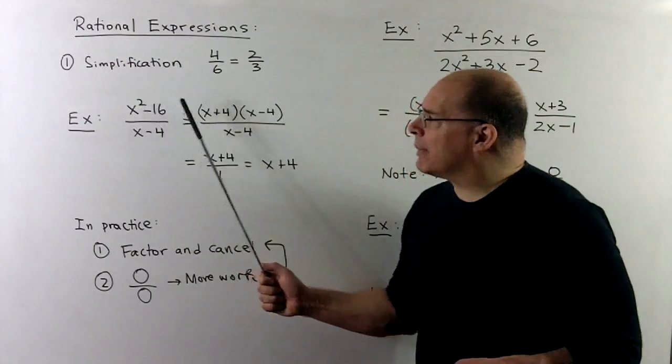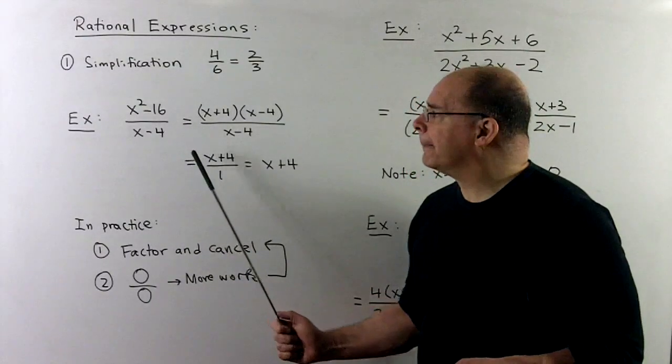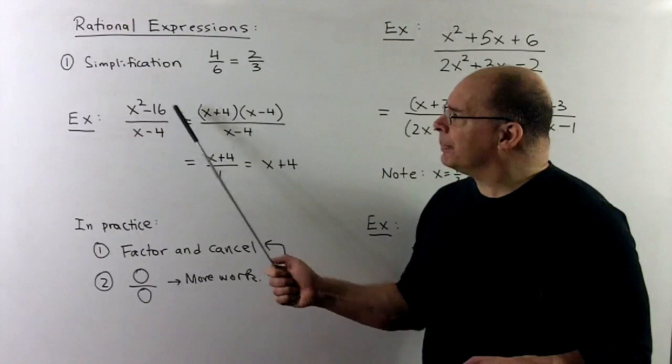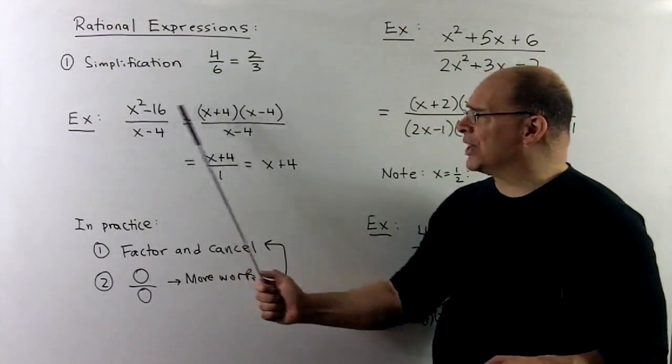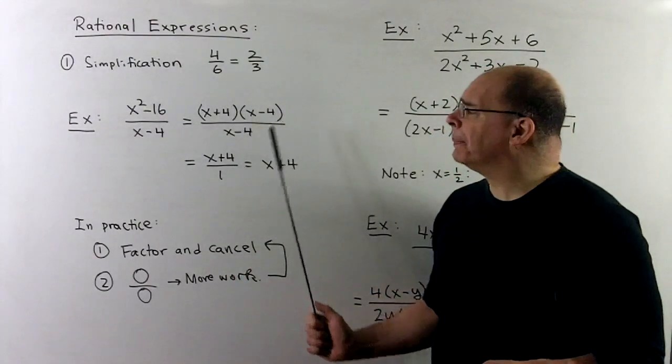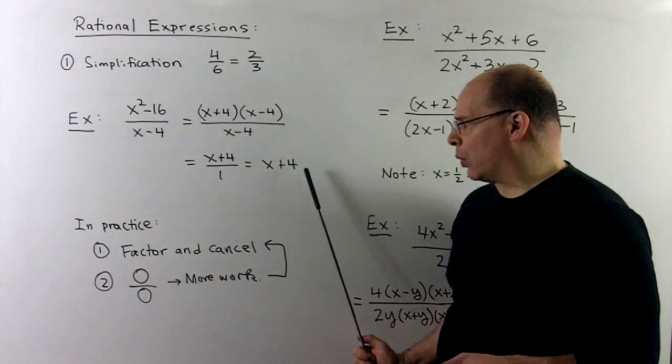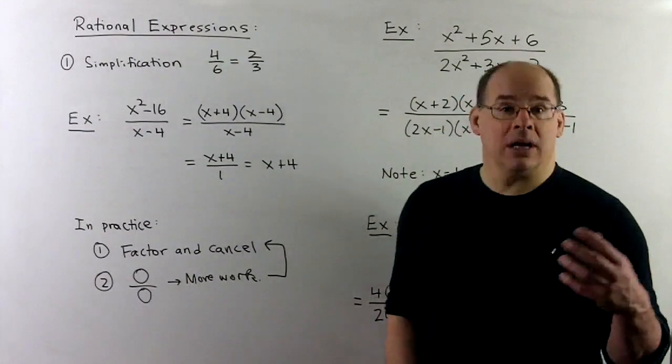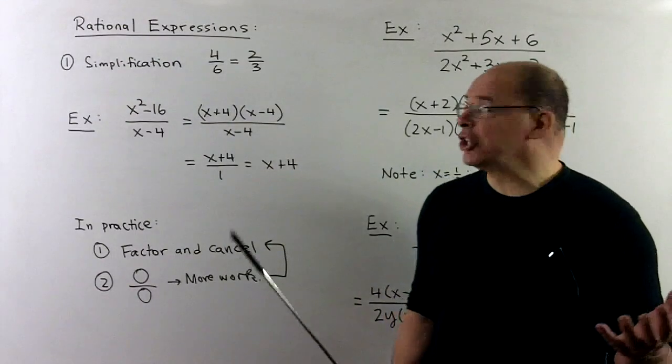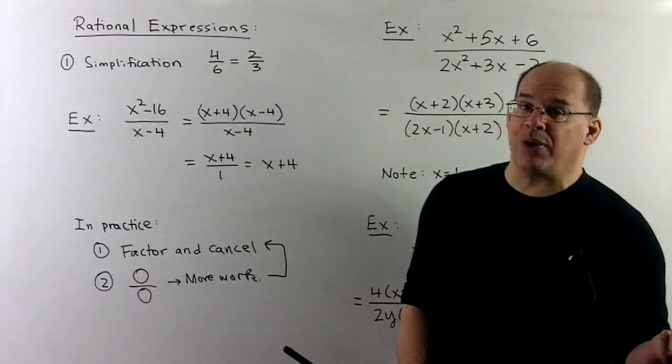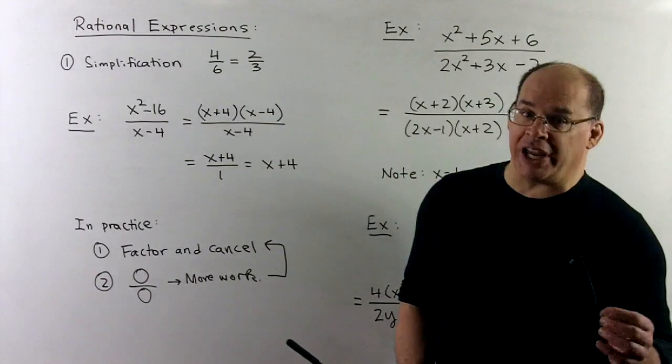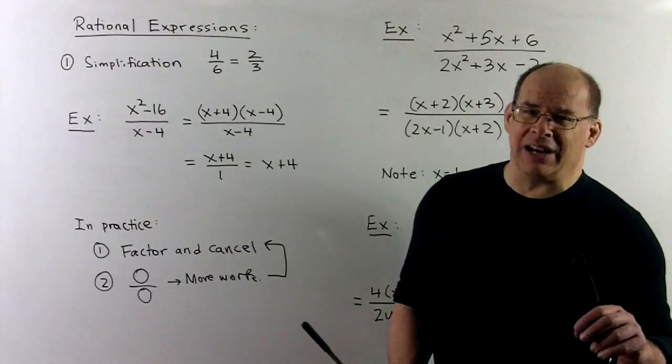For instance, if I have x squared minus 16 over x minus 4. The numerator, that's a difference of two squares. That factors as x plus 4, x minus 4. The x minus 4's cancel, leaving us with an x plus 4. Note, that's the same rational expression. If we're talking rational function, we have to worry about how we just change the domain. But not an issue for here.